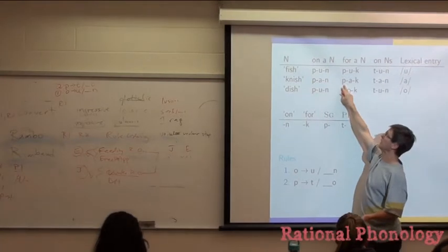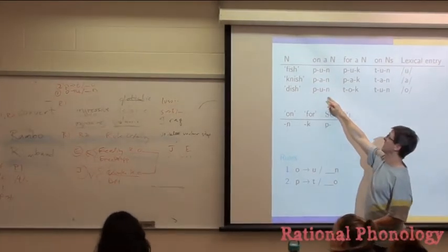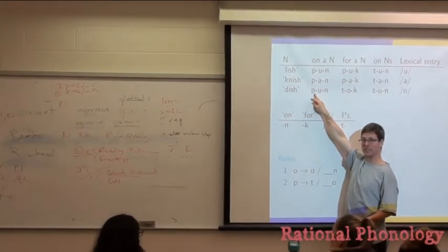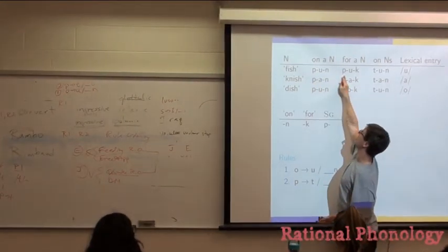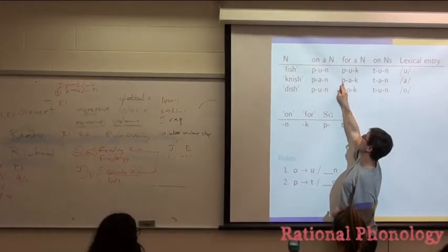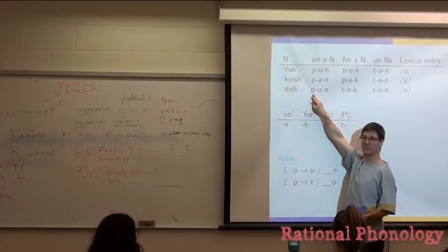Why do we have a T here? It's the underlying P that became the T. But it doesn't happen here. Why do we have a P here? It's the singular. Why do we have a P here? The singular. Why do we have a P here? Singular. Why do we have a P here? Singular. Why do we have a P here?